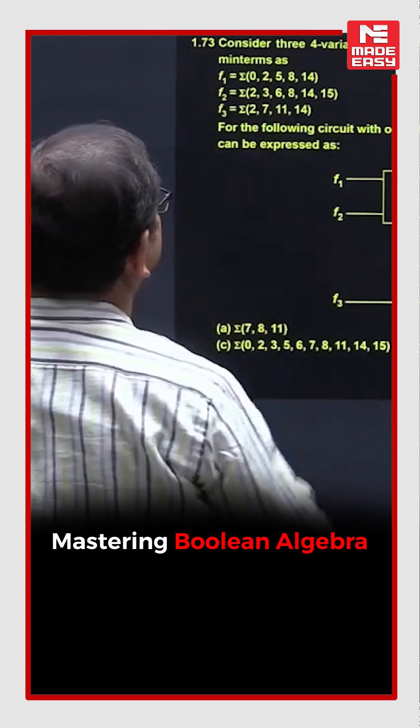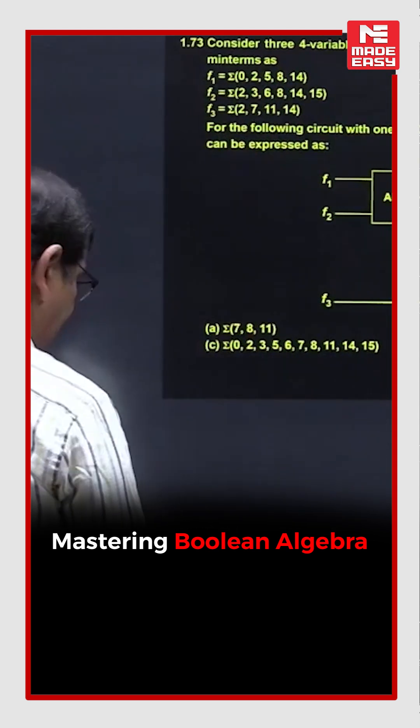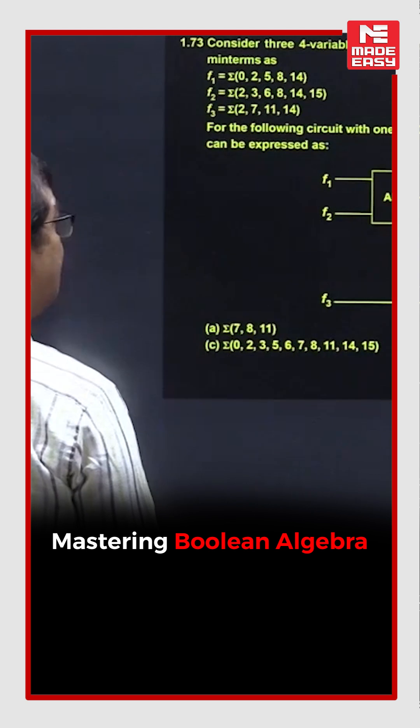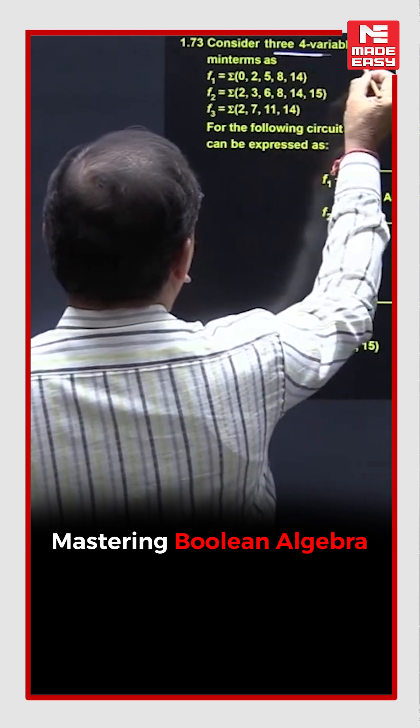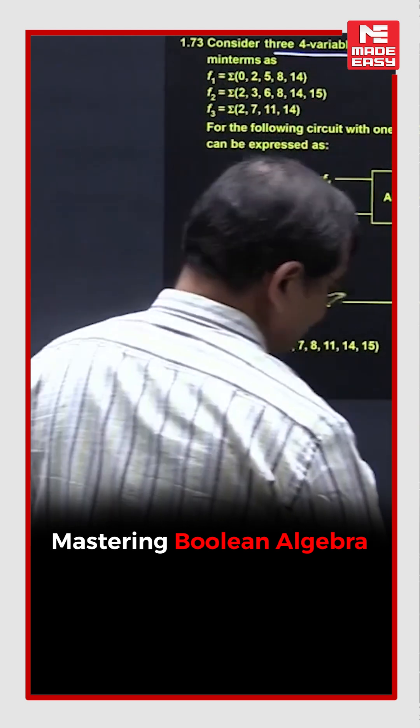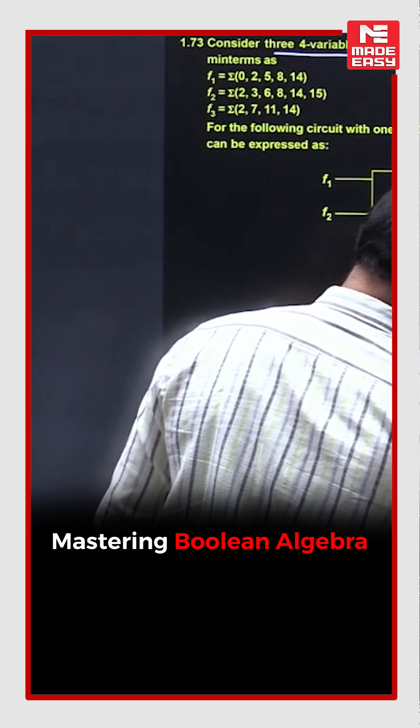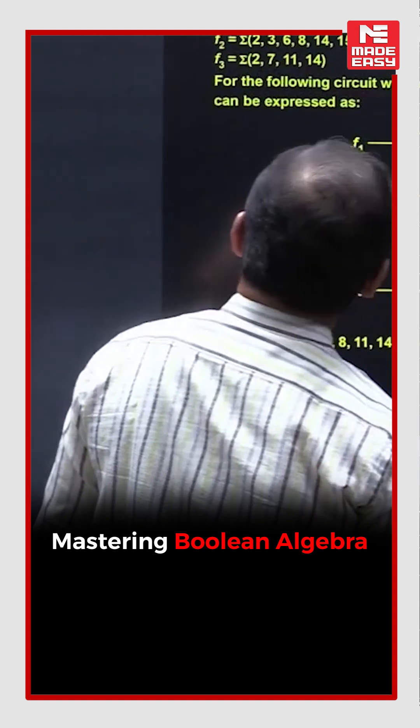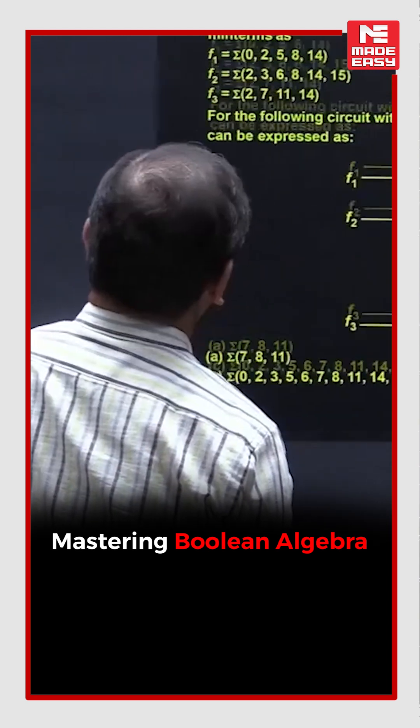So the question says consider three 4-variable Boolean functions. So here we are having, what are the functions f1, f2, f3. The functions given in the question, these functions are basically on 4 variables.